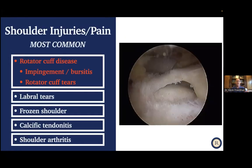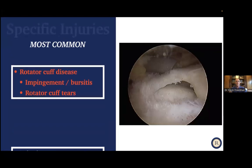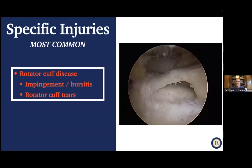What are the most common shoulder injuries I see? Rotator cuff disease is probably the most common, which includes both impingement or bursitis and rotator cuff tears. But we also see labral tears, frozen shoulder, calcific tendinitis, and shoulder arthritis. We'll go through all of these, although we'll really focus on rotator cuff disease tonight.